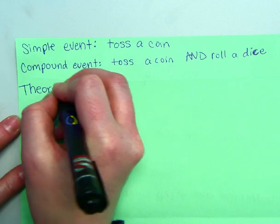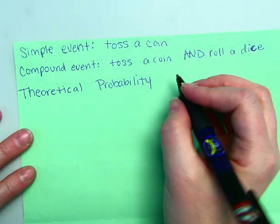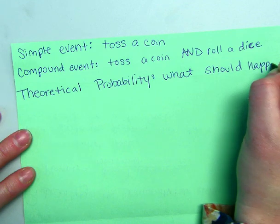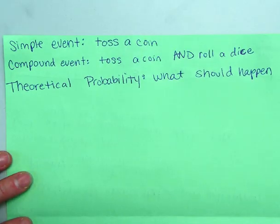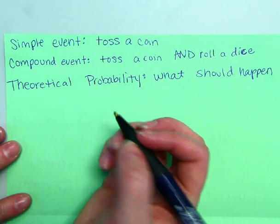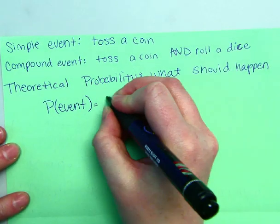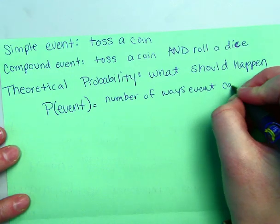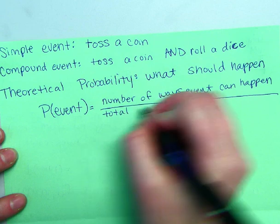We are also going to write theoretical probability. Theoretical probability is what should happen. Think about theory. Theory is, in theory, this should happen. But it's not always going to happen. So theoretical is what should happen if we do that certain event, whether it's toss a coin, or roll a dice, whatever it is. So we do P of the event. So this is how we write probability.